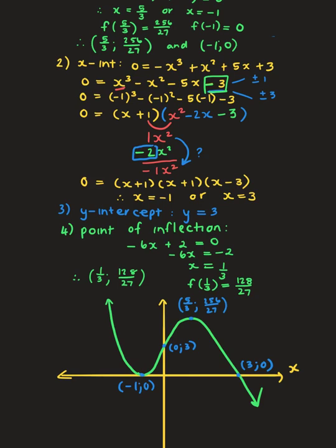Label all coordinates: (-1, 0) as x-intercept and stationary point; y-intercept at (0, 3); second stationary point at (5/3, 256/27); x-intercept at (3, 0); and point of inflection at (1/3, 128/27) — halfway between the two turning points.